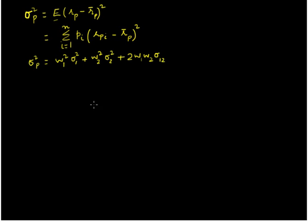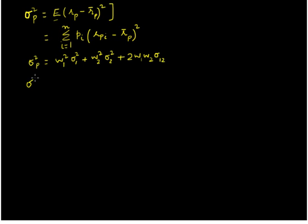Both formulas are essentially the same. With a little mathematical juggling we can show this. Let us start with the first formula and proceed towards the second one. Let us say w1 is the proportion invested in asset 1, w2 is the proportion invested in asset 2, r1 is the return on asset 1, and r2 is the return on asset 2. We can now rewrite the first formula.